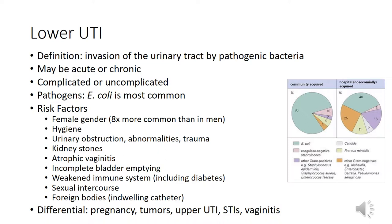Cystitis can occur in the urethra causing urethritis, in the bladder causing cystitis, in the bladder wall causing interstitial cystitis, and in the prostate gland causing prostatitis. Infections can be acute or chronic — chronic meaning the infection is ongoing, acute meaning it's episodic.